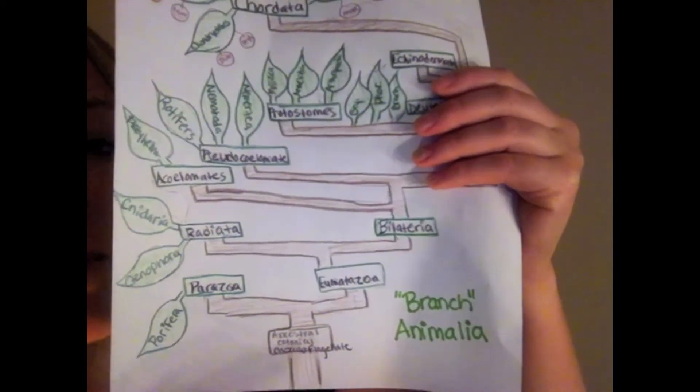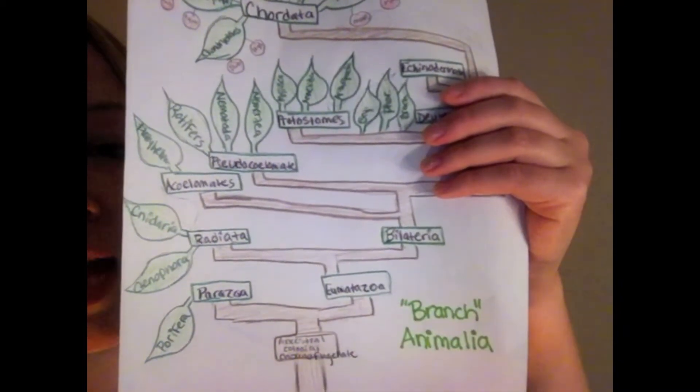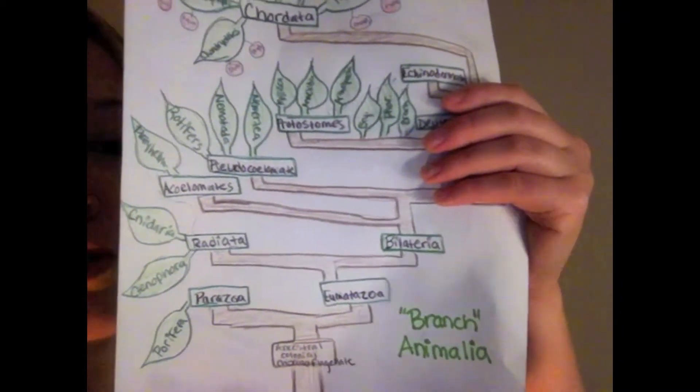From there, the branch parts into radiata and bilateria, which are forms of anatomical symmetry. Those species with radial symmetry can be cut up like a pizza or a pie, and all those pieces will look the same. Those with bilateral symmetry can only be cut down a singular line that splits the animal into two mirroring images. For humans, we get split right down the middle, ventrodorsally.